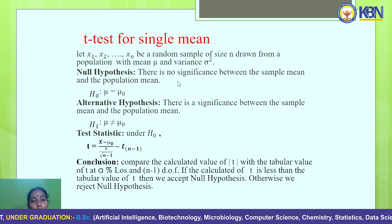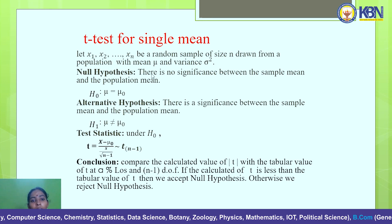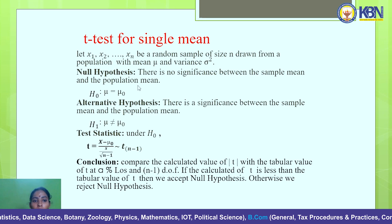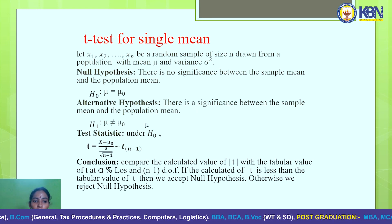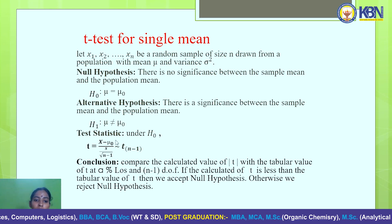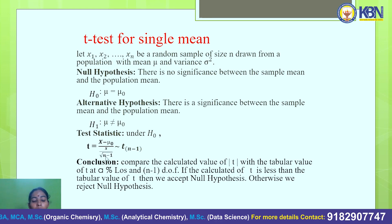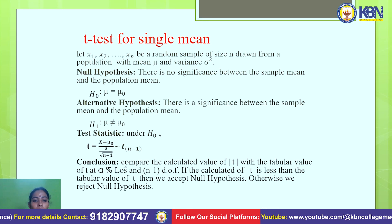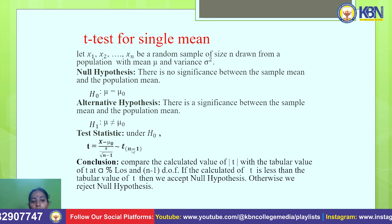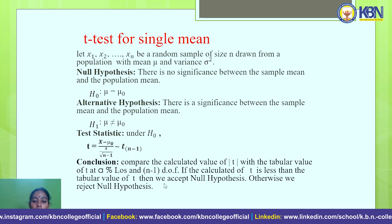T-test for single mean: Let x₁, x₂, …, xₙ be a random sample of size n drawn from a population with mean μ and variance σ². The null hypothesis is that there is no significant difference between the sample mean and population mean: H₀: μ = μ₀. Under H₀, the test statistic is t = (x̄ − μ₀) / (s/√(n−1)), which follows a t-distribution with n−1 degrees of freedom. Compare the calculated t with the tabular t at n−1 degrees of freedom at the α level of significance. If the calculated t is less than the tabular t, accept the null hypothesis; otherwise reject it.